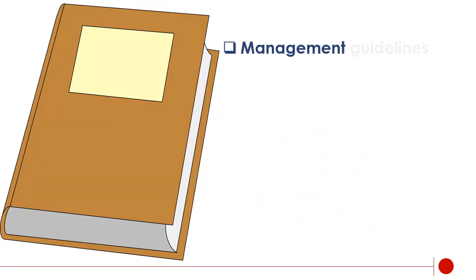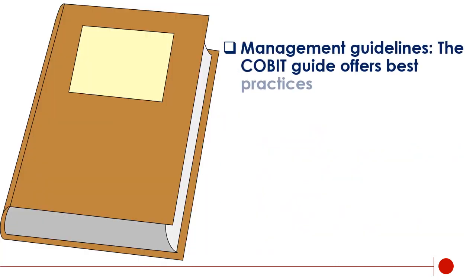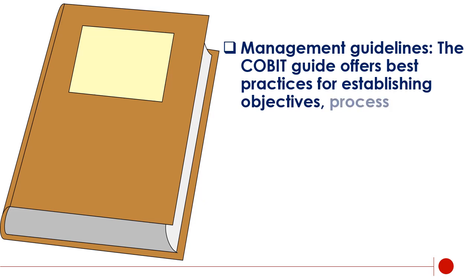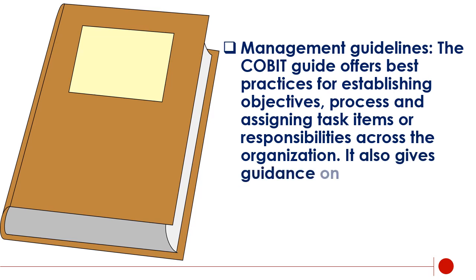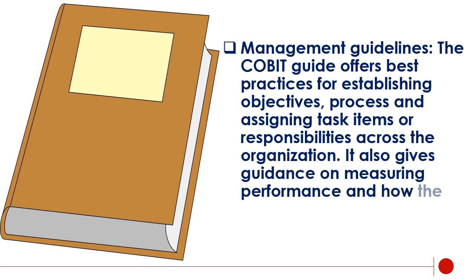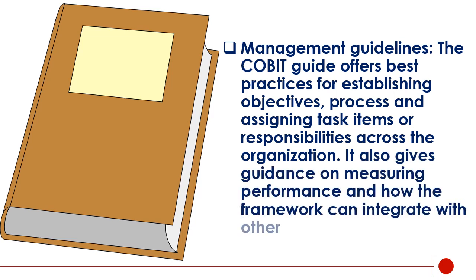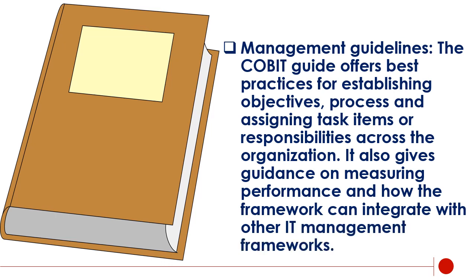Management guidelines. The COBIT guide offers best practices for establishing objectives, processes, and assigning task items or responsibilities across the organization. It also gives guidance on measuring performance and how the framework can integrate with other IT management frameworks.